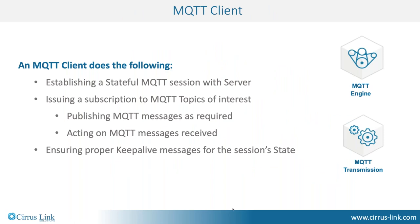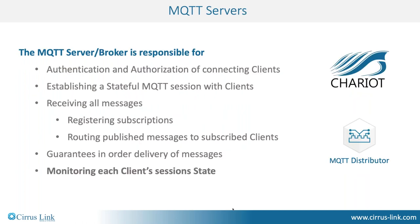There are two things required for an MQTT infrastructure. First, a client: it establishes an MQTT session with a server via a remote-originated connection, issues subscriptions to topics it's interested in, publishes information on topics others would be interested in, and maintains keep-alive messages so others know it's online and available. Second, an MQTT server — sometimes called a broker — is responsible for authentication and authorization of clients, creating sessions, receiving all published messages, registering subscriptions, and routing messages to subscribed clients in real time.